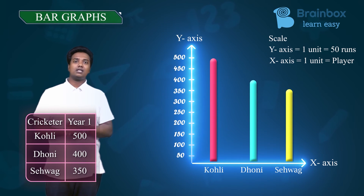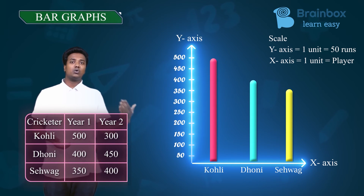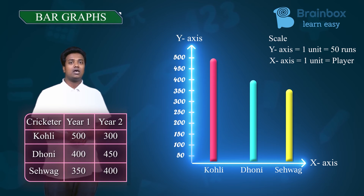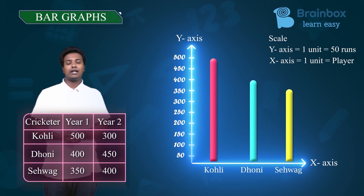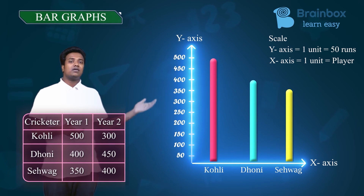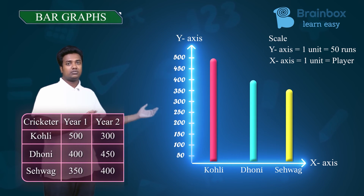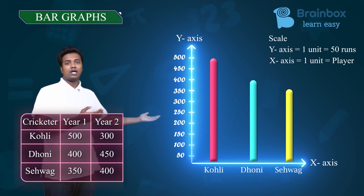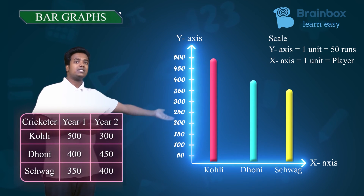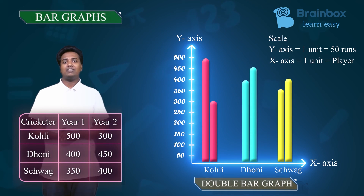Now let us see what a double bar graph means. Suppose in the next coming year they have scored these numbers of runs. In order to represent these numbers in the form of a double bar graph, we need to put their runs in a pictorial way as bars besides the previous data. This is how a double bar graph looks like.